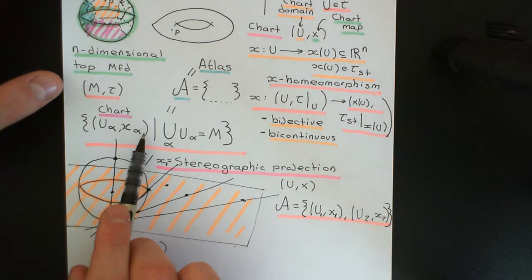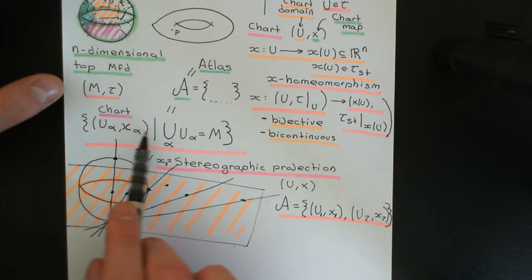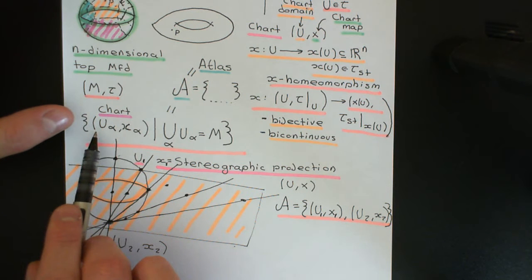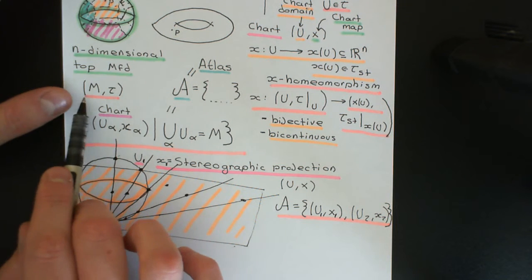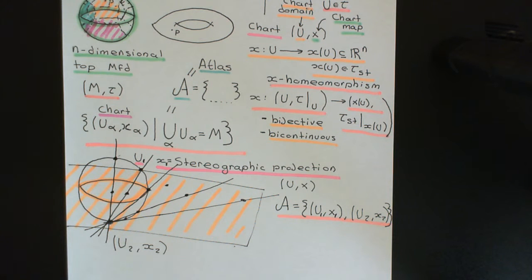An atlas is a collection of charts which together cover the entire manifold, so the union of all of the chart domains gives you the entire manifold back again. These charts consist of a chart domain which is some open set from our manifold, along with a chart map, which is a map from the chart domain into an open subset of R^n. That map needs to be a topological homeomorphism. So an n-dimensional topological manifold is a patchwork quilt of topological subspaces which are all homeomorphic to open sets in R^n with the standard topology — something that locally looks like R^n with the standard topology.